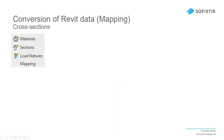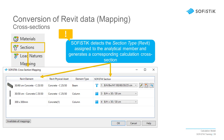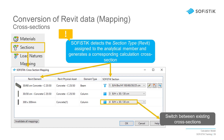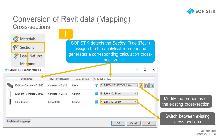In a similar fashion to materials, we now look at cross sections. Sophistic will analyze the Revit elements and associate a Sophistic section to it. As much as possible, Sophistic will try to find a standard section type that matches the Revit element; otherwise, Sophistic will create a polygonal cross section with the same geometry. Like for materials, you can adjust the matchmaking yourself or modify the properties of the Sophistic section. A dialog will open for geometrical adjustments or the specification of reinforcements. If needed, you can also create a new cross section from Sophistic's catalog of standard profiles.